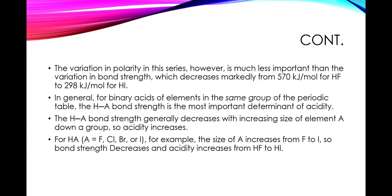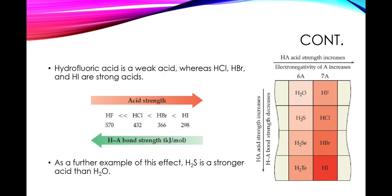So down a group, acidity increases. For HA where A is a halogen like fluorine, chlorine, bromine, or iodine, the size of A increases from fluorine to iodine. Bond strength decreases and acidity increases from HF to HI. Here is the chart of comparison of acidity in the halogen group. You can see that acid strength increases down a group.